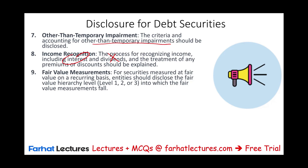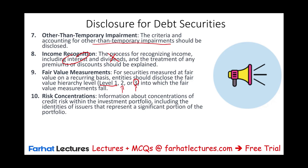Regarding fair value: if the bond is publicly traded, that's Level 1, relatively straightforward. But if we computed fair value using Level 2 or Level 3 — especially Level 3 — we need to disclose exactly how we came up with that computation. We also need to address risk concentration: are we exposed to only a specific type of bonds in one industry? We must provide information about the concentration of credit risk within the investment portfolio, including the identity of issuers that represent a significant portion.